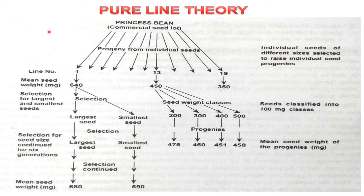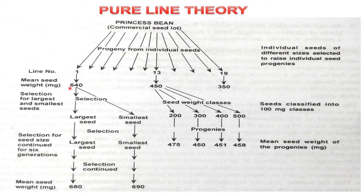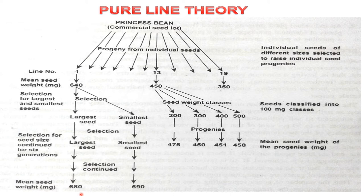This is the flowchart of how he did the experiment. From a commercial seed lot, progeny from individual seeds were taken — 19 lines in total. The first line had the biggest seed weight of about 640 mg, and the 19th line had the smallest seed weight of 350 mg. From each line, seeds were screened into largest and smallest, and this screening was done up to the sixth generation, after which the seeds were weighed.